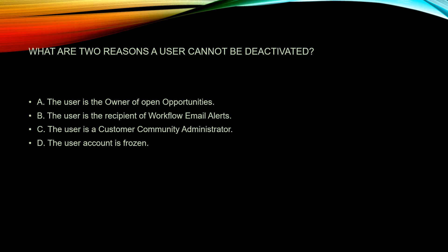Question five: What are two reasons a user cannot be deactivated? This happens a lot — if you work at a company with a lot of sales reps, the turnover rate is insane. Options are: A: The user is the owner of an open opportunity. B: The user is a recipient of workflow email alerts. C: The user is a customer community administrator. D: The user's account is frozen.